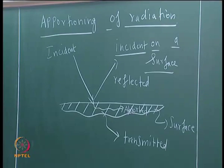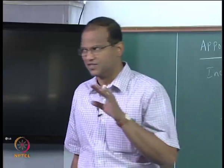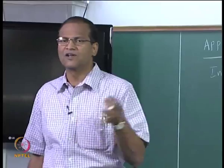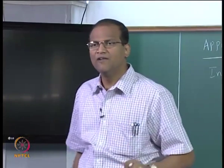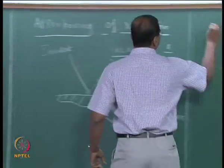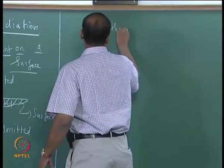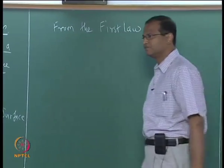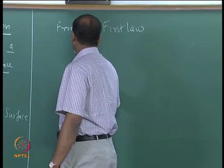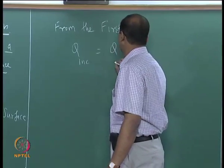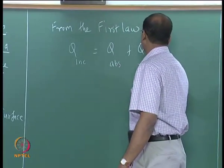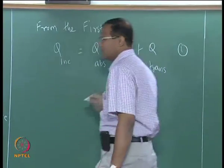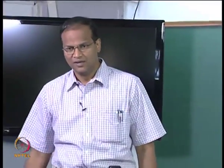If you apply the first law of thermodynamics to this surface — tracking what is happening to the incident radiation — then mathematically: Q_incident = Q_absorbed + Q_reflected + Q_transmitted. ABS is absorbed, REF is reflected, TRANS is transmitted.